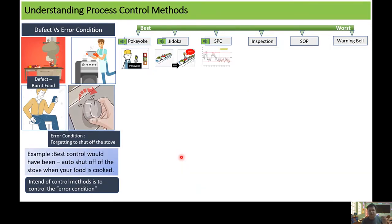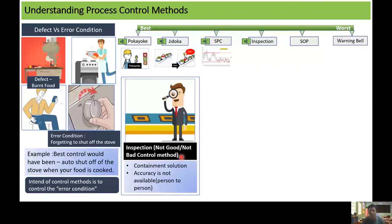The fourth control method is inspection. We all know about quality inspection. Quality inspection is not a good control method or not a bad control method because it is used to inspect and segregate or differentiate what is good and what is bad. In this differentiation, it always depends on the person who is working and it depends on the accuracy of the person or the ability of the person to see and inspect what is right and what is wrong.